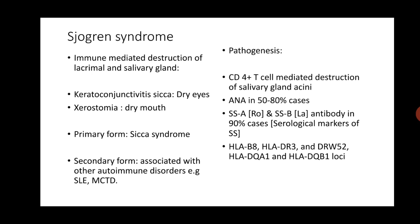Sjögren Syndrome is an immune mediated destruction of the lacrimal and the salivary glands. The lacrimal gland is present within the orbit and produces tears, which help in lubrication of the conjunctiva of the eyeball. Destruction of the lacrimal gland leads to decreased tear production, manifesting as dry eyes, known as keratoconjunctivitis sicca. Destruction of the salivary gland leads to dryness in the mouth, known as xerostomia. A primary and a secondary form of this disorder are known — the primary form is known as sicca syndrome, and the secondary form is associated with other autoimmune disorders such as systemic lupus erythematosus and mixed connective tissue disorders.